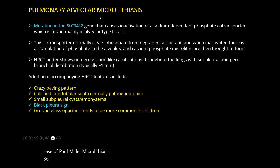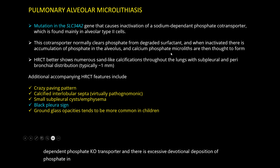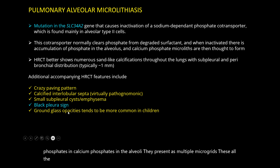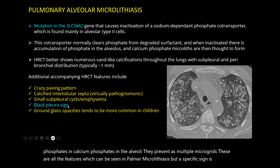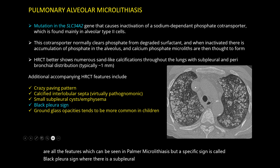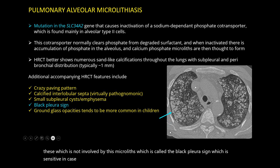There are densely calcified nodules scattered in bilateral lung fields — this is a classical case of pulmonary alveolar microlithiasis. This condition occurs due to mutation in the SLC34A2 gene, which encodes a sodium-dependent phosphate co-transporter, leading to excessive deposition of calcium phosphates in the alveoli, presenting as multiple microliths. A specific sign is called the black pleura sign, where there is a subpleural zone of lung that is spared from these microliths — this is sensitive and characteristic of pulmonary alveolar microlithiasis.